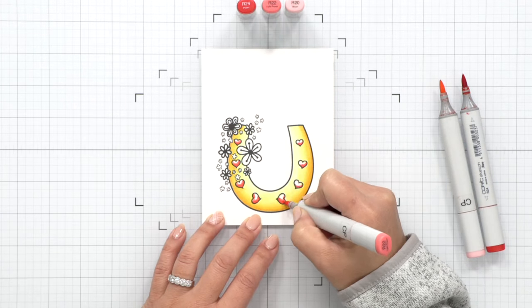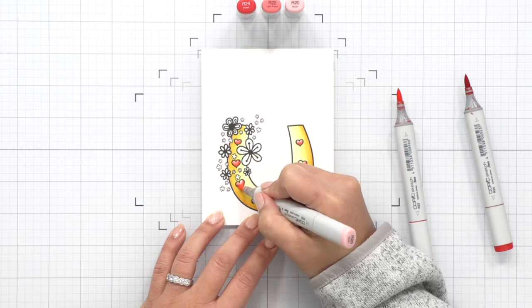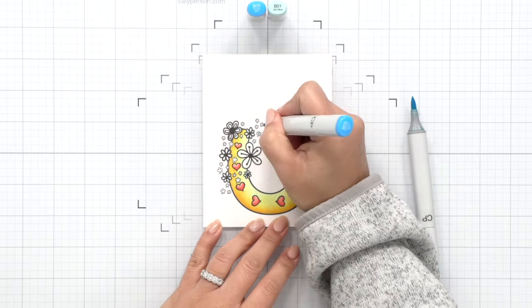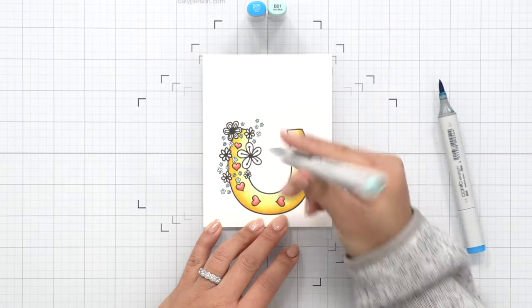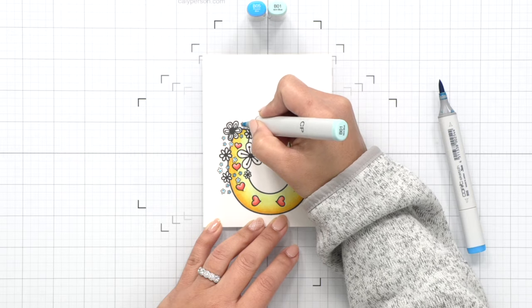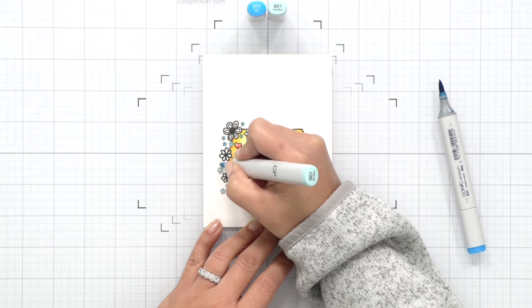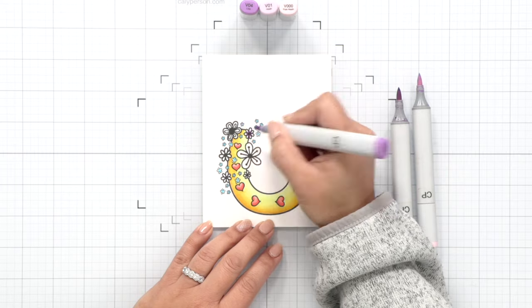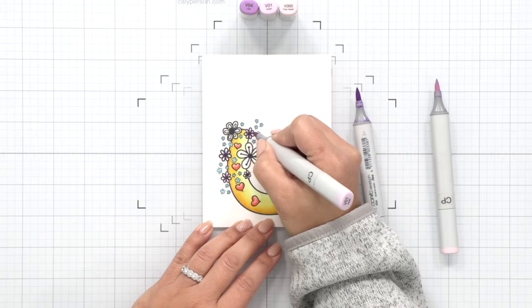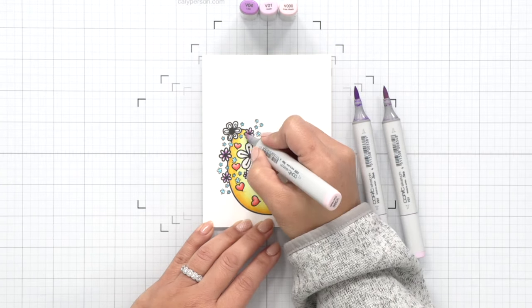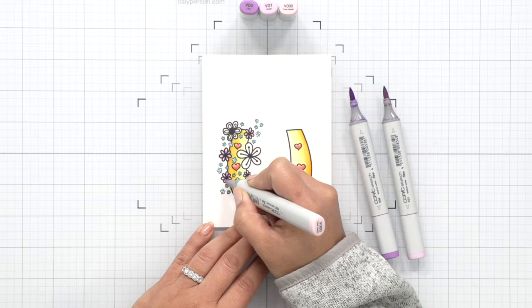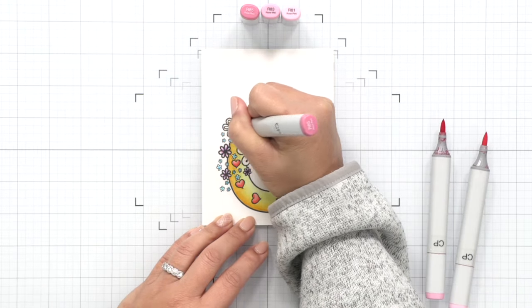Next I'll color these hearts here in some reds. I'm using R20, R22, and R24 so they're a little bit on the lighter side for me and then on these flowers I wanted it to be a bit more colorful so I'm adding in some blues with these tiny little blooms which are really simple and easy to color. For the medium-sized blooms I'm using a purple and then for the larger flowers I'm using a pink.